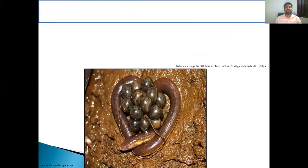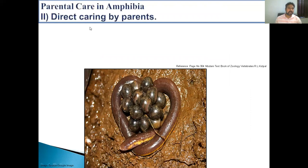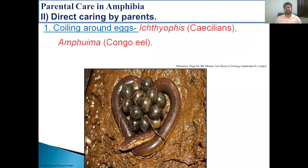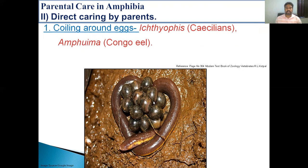The next category of parental care in amphibia is direct caring by parents. The first way is coiling around eggs. In this case, for example, the Congo eel Amphiuma and the caecilian Ichthyophis — the female lays eggs on damp soil and guards the eggs by coiling around them until they hatch.